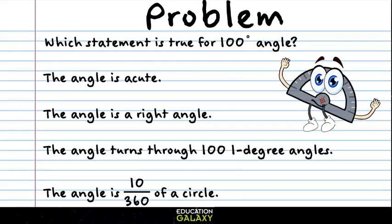Let's try one last problem. Which statement is true for a hundred degree angle? The first answer choice says the angle is acute. That's not true. Acute angles are less than 90 degrees. The second answer choice says the angle is a right angle. But right angles are exactly 90 degrees, not a hundred. So that answer choice can't be correct.